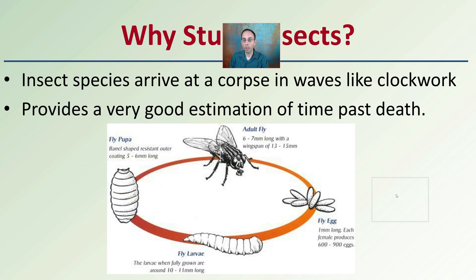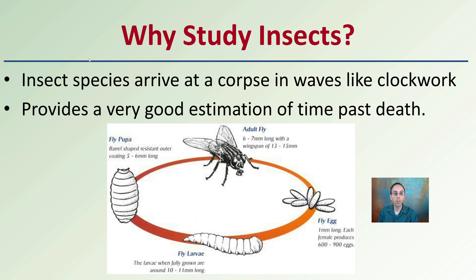So why study insects? Insect species arrive at a corpse in waves like clockwork. When looking at a crime scene, insects are valuable because they have a very distinctive and repeatable habit. Because of this, they provide a good estimation of the time that has passed since the individual perished — a great reason why entomology is such a major focus within forensics.